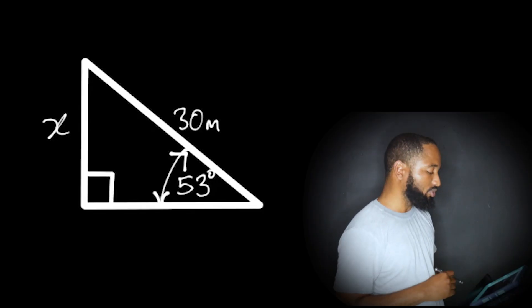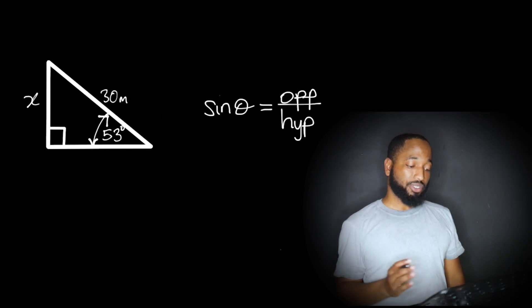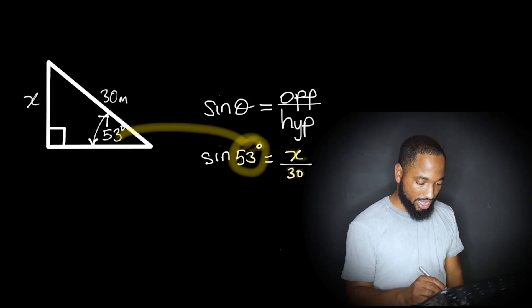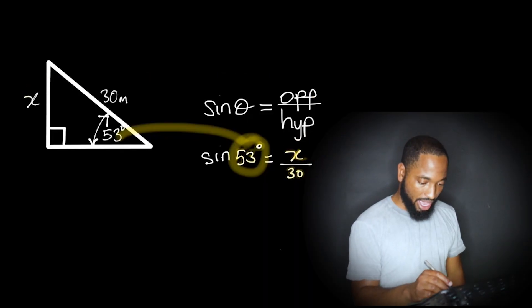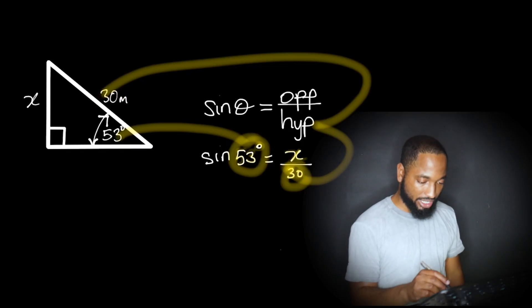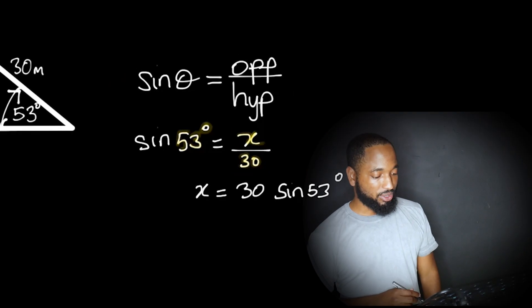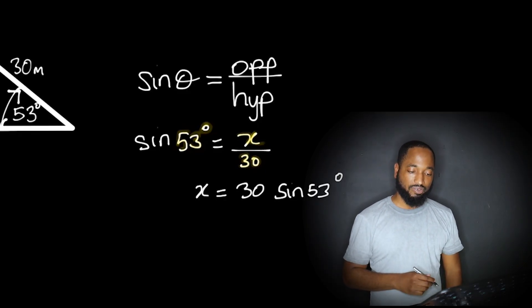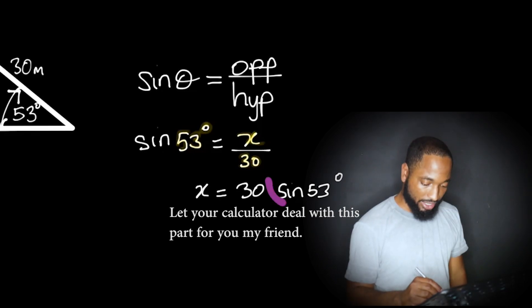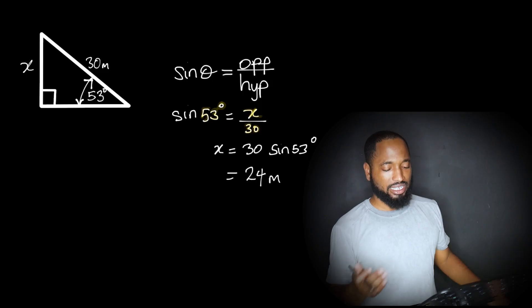So we have the hypotenuse and the opposite. That means we've got to use sine theta equals opposite over hypotenuse. Then you go to a substitution line. The 53 is the angle, X is the opposite, and we have 30 which is the hypotenuse. Some simple algebra will get you down to X equals 30 times sine 53. So in the end, X equals 24 meters. That's easy right? Let's look at another one.